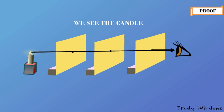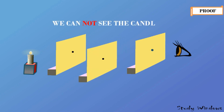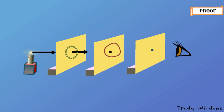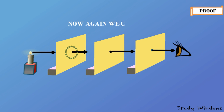But if we move any one of the cardboards out of alignment, we cannot see the candle. This is because light passes through the first cardboard but in the second cardboard there is no hole at that position, so light cannot cross it and cannot reach our eyes. If we move the cardboard back to its original position, the light again passes through all the holes and we can see the candle once more.